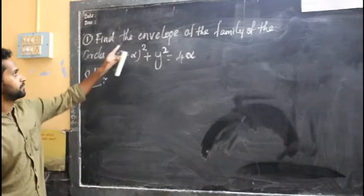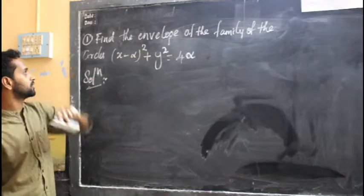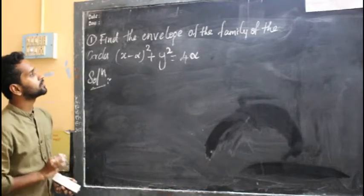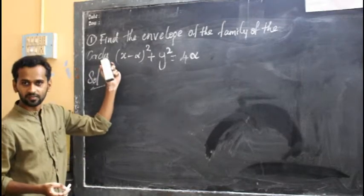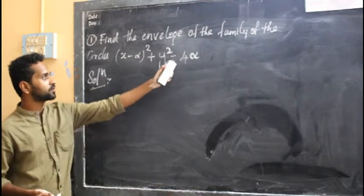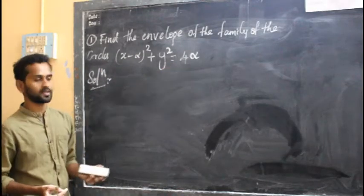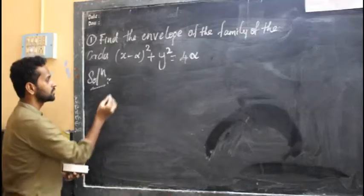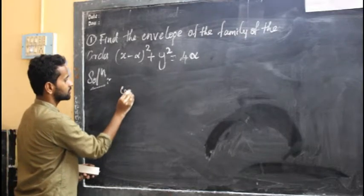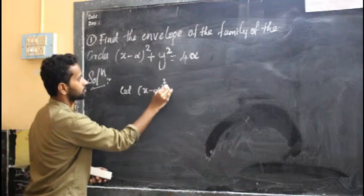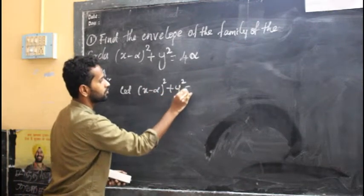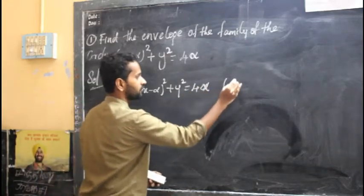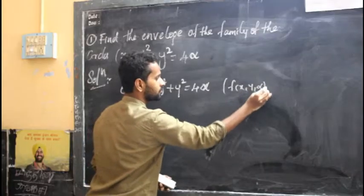Let us find an envelope of the family of the given circle. The given circle is: find the envelope of the family of the circle x minus alpha squared plus y squared equal to 4 alpha. Let us consider the given family of the circle. This is the given curve: x minus alpha squared plus y squared equal to 4 alpha. This is given as f of x, y, alpha equal to 0.